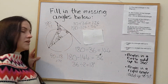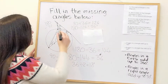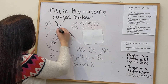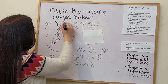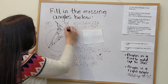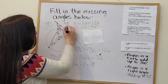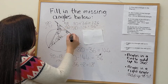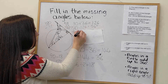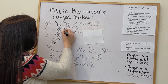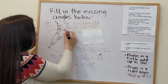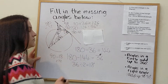Then for another triangle: 108 plus 54 is 162, and 180 minus 162 is 18 degrees. And to get the final angle, I subtract 18 from 90, giving 72 degrees.